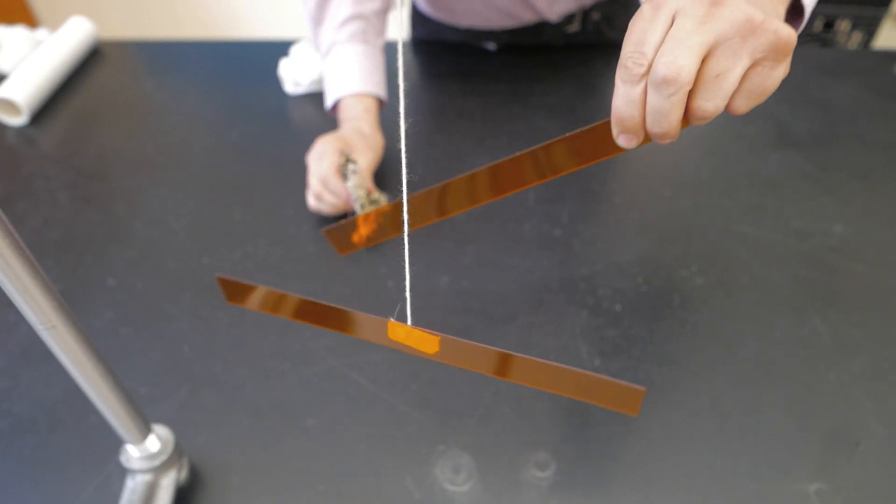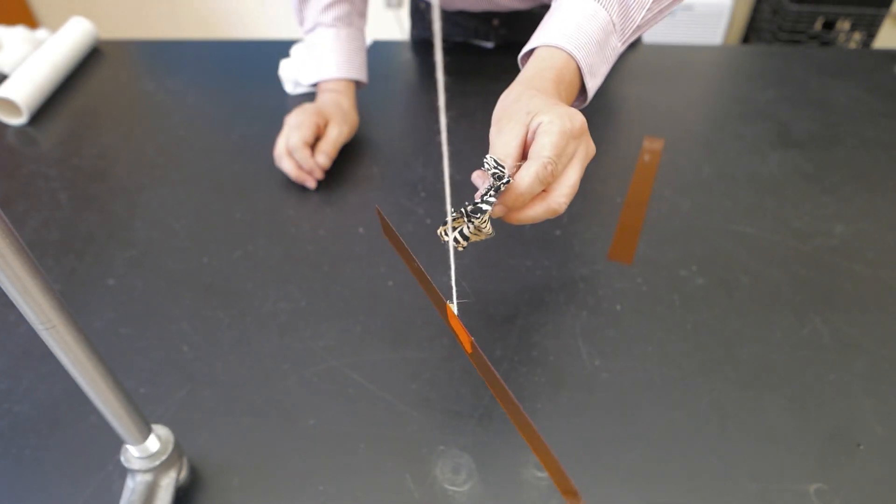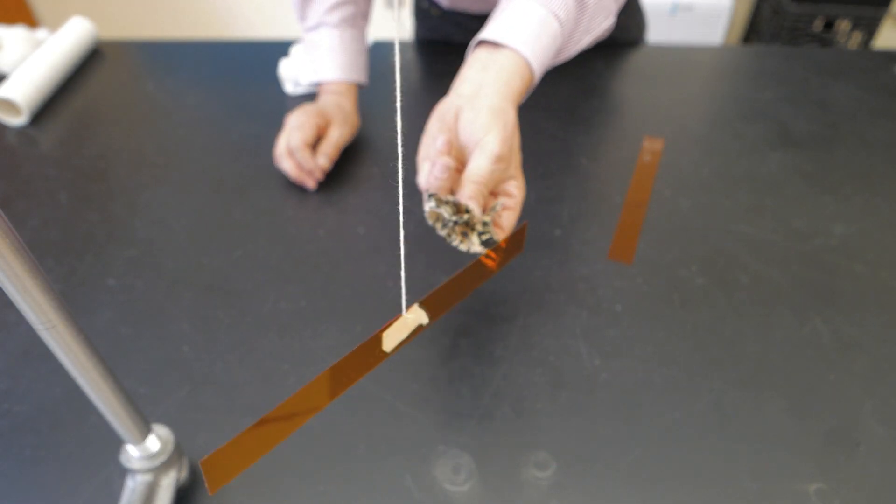Now one more note, it's important to remember that both materials get charged. When the acetate gets positively charged, this orlon, as we can see, is now negatively charged.